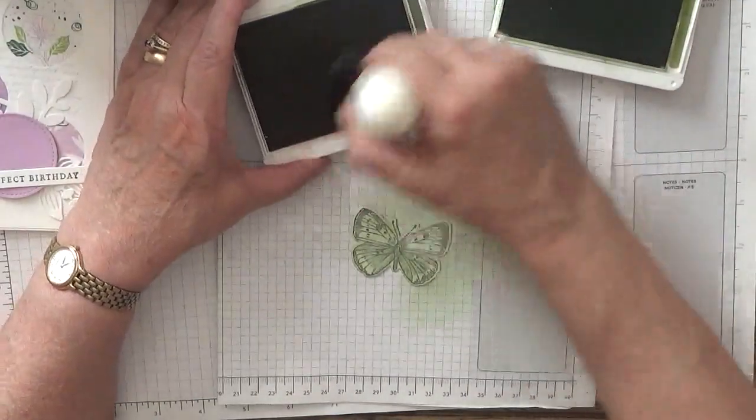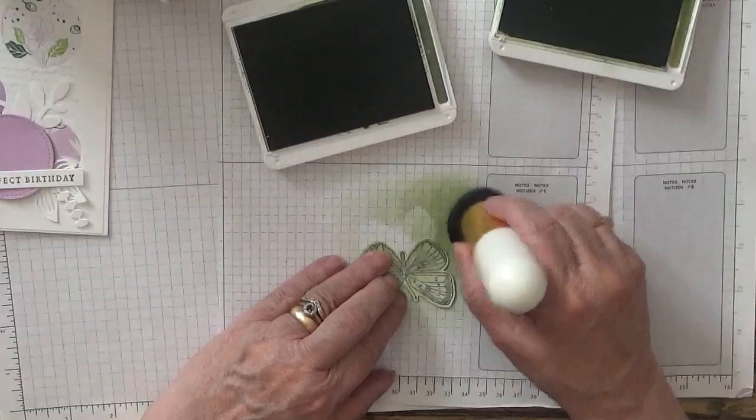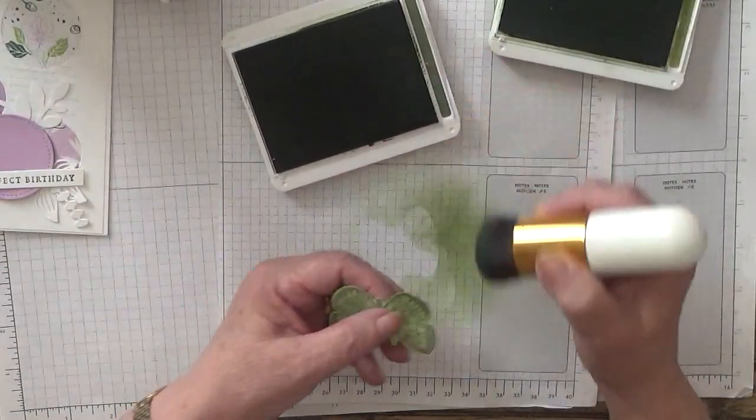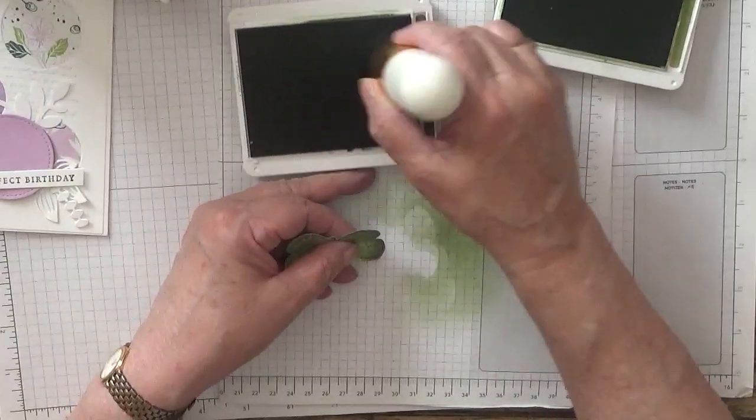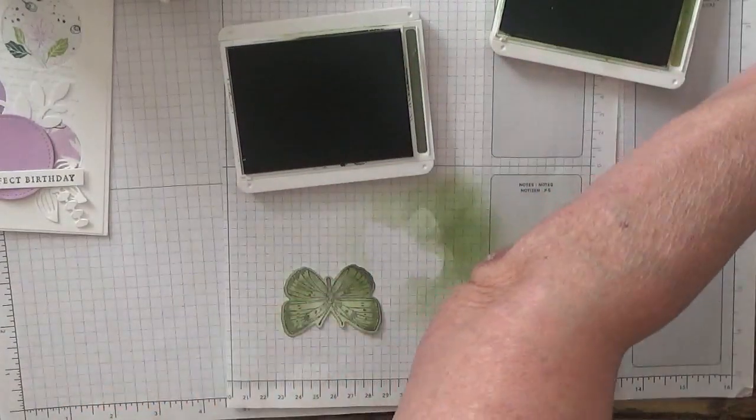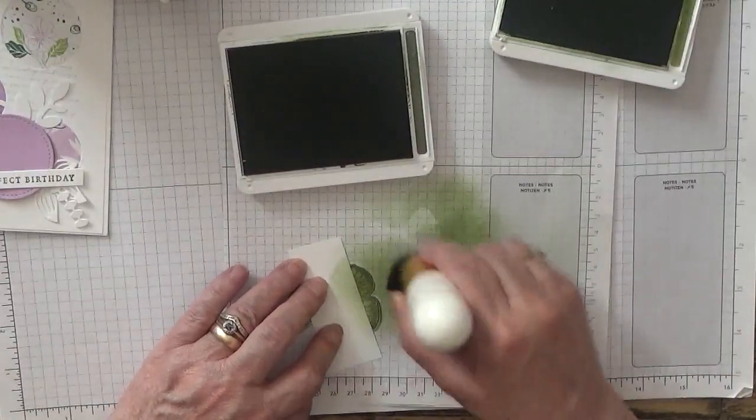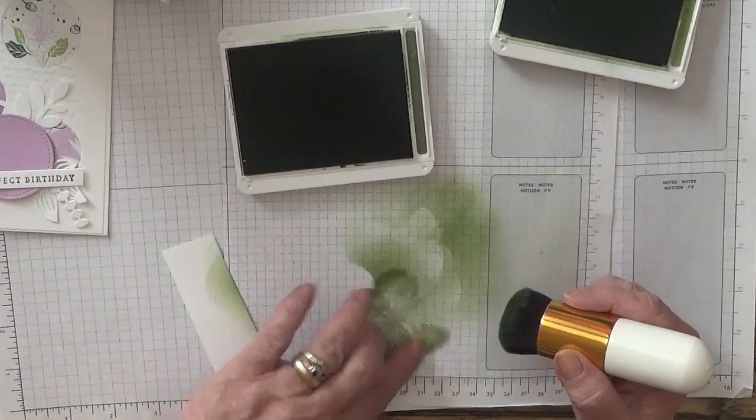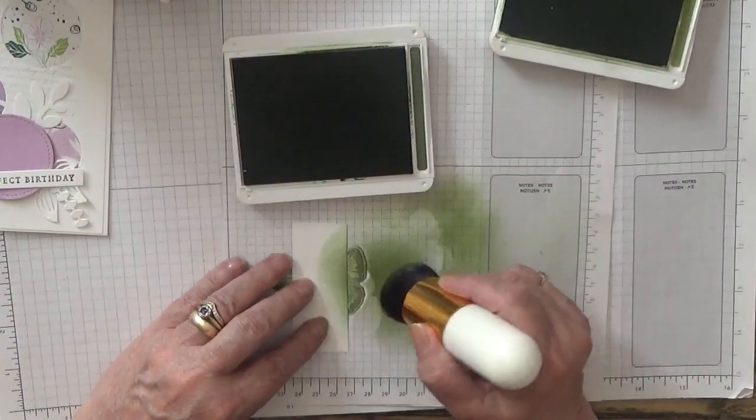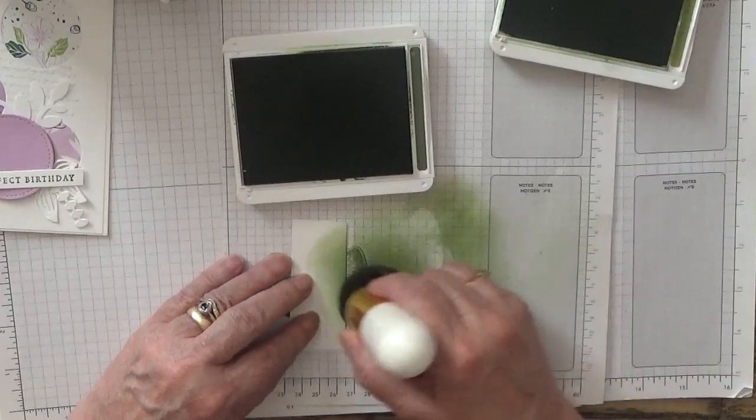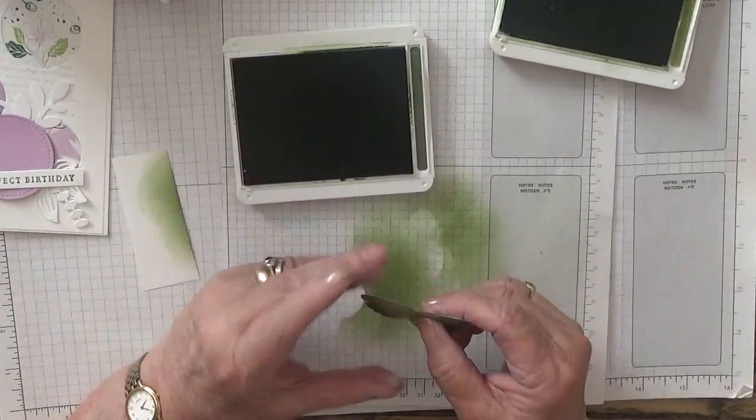Then with Mossy Meadow, I'm just going to color in the edges. Then I'm going to lift it up and just make it really dark. I'm going to do it this way. And there's our green butterfly. It'll go on there.